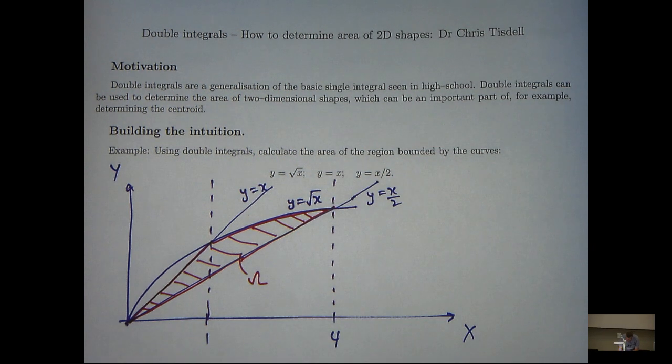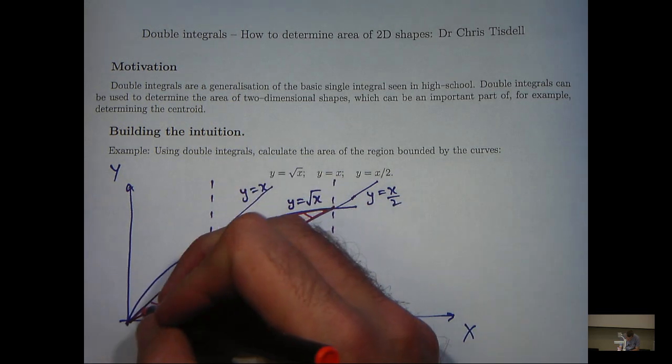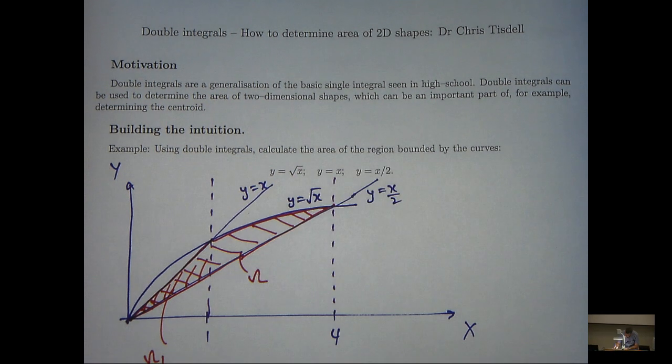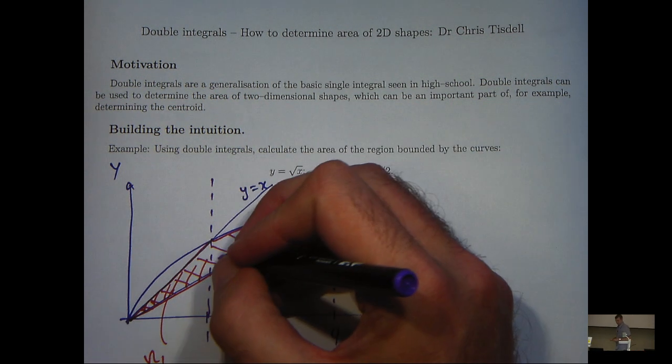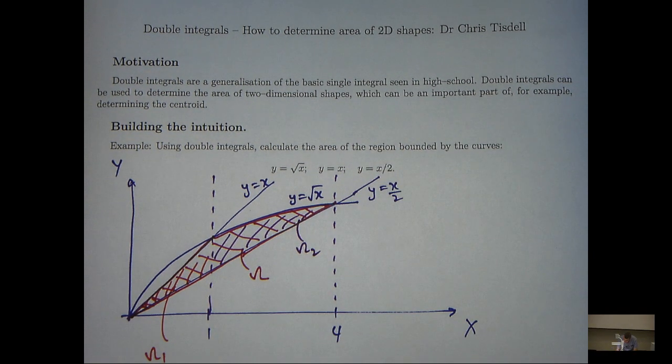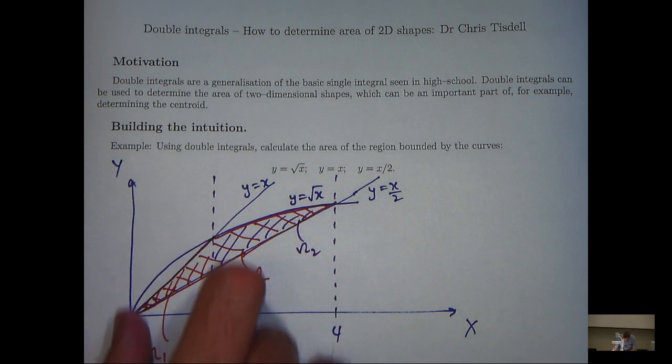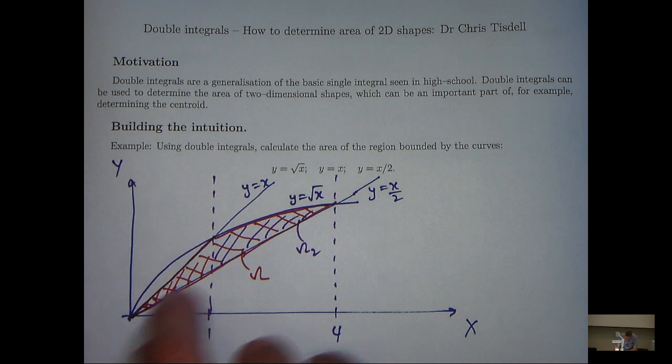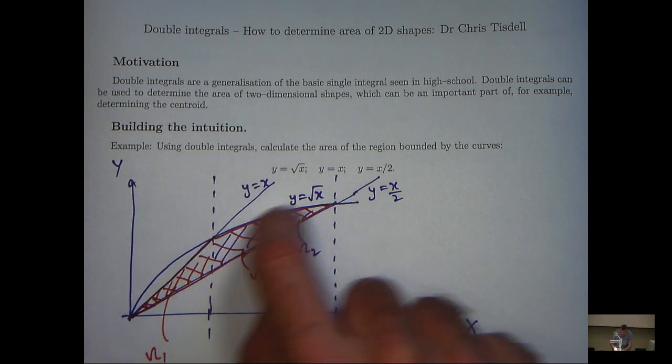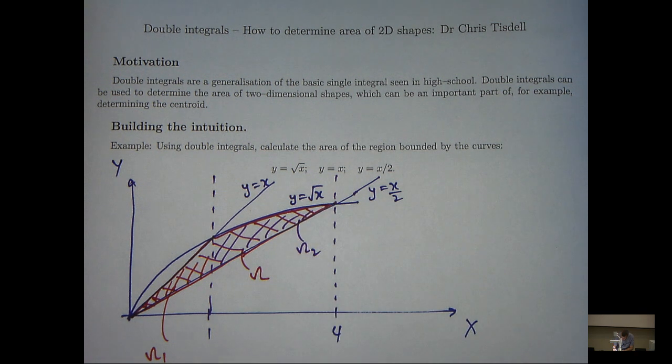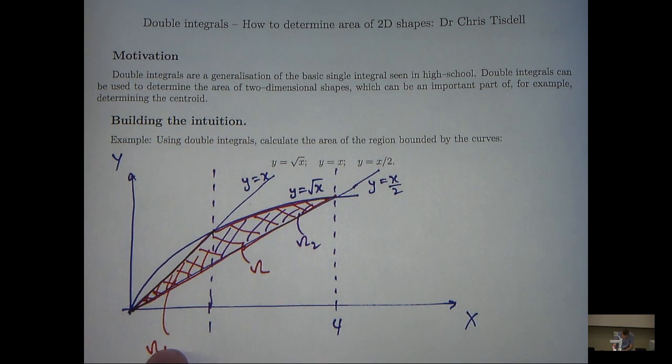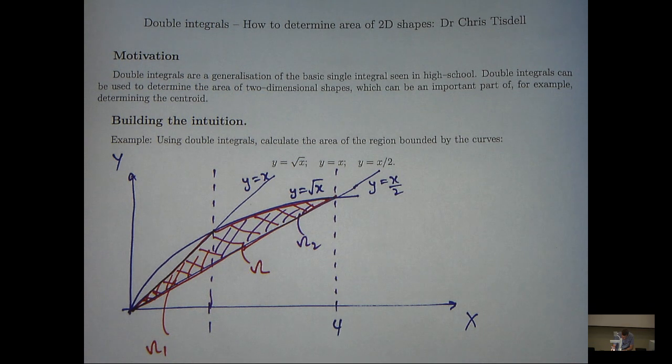So if I call this region omega 1 and this region omega 2, then you can see this region here is bounded by these two parallel lines parallel to the y-axis and these two non-parallel lines. Omega 2 is bounded by these two parallel lines to the y-axis and these two non-parallel lines. So to calculate the area of the whole omega, I'm going to calculate the area of omega 1 and omega 2 and add the two areas together.